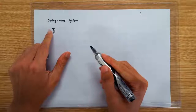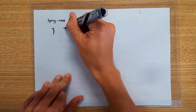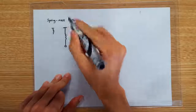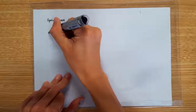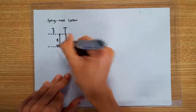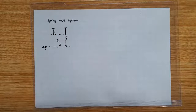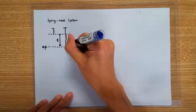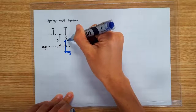We start with a spring at its natural length, and let's say we load it with a mass. As a result, it finds its equilibrium position when the spring is stretched by an extension of, say, E. At the equilibrium position, the spring is stretched with an extension of E.